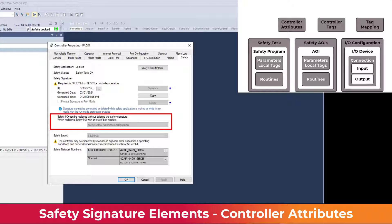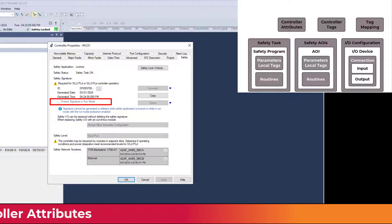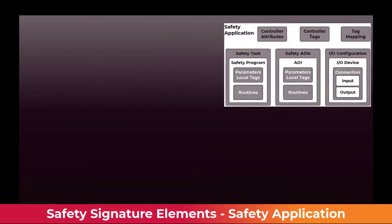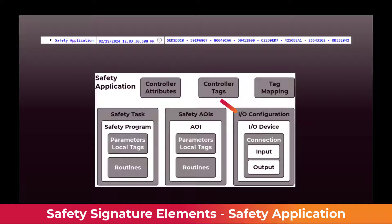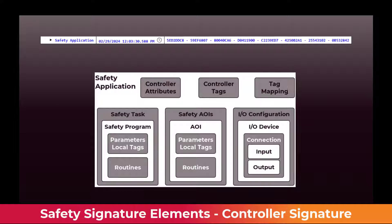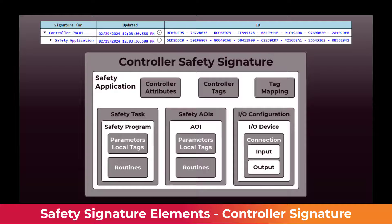The safety application signature includes the Safety IO configuration, safety add-on instructions, safety task, tag mapping, controller tags, and controller attributes. The controller safety signature encapsulates all safety-related software in the controller.